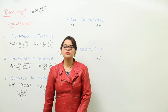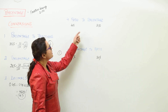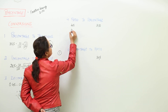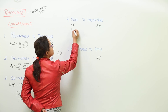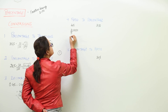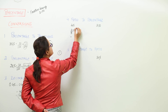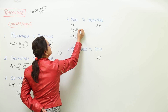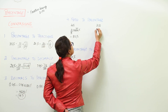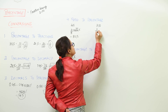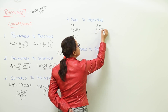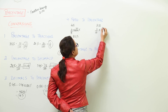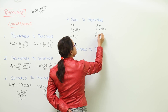Now let us move on to converting ratios to percentage. The first step is to convert the ratio into fractional form and multiply it with 100. After simplification you get 80 percent. Similarly, for the next ratio, convert it to fractional form and multiply with 100 percent. Simplifying gives 10 and we are left with 30 percent.